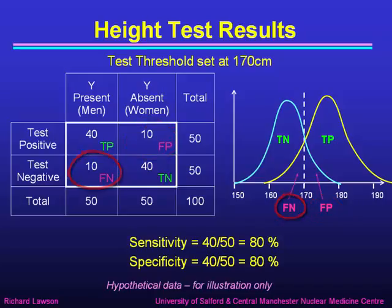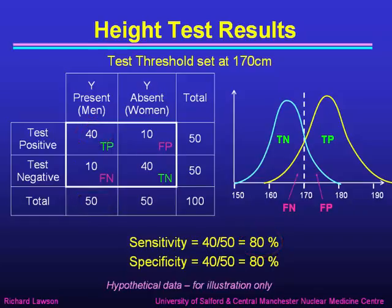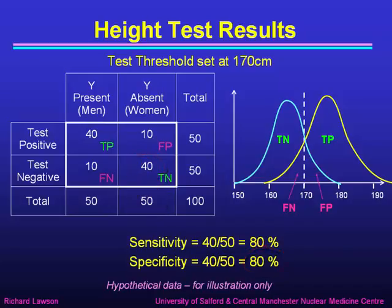If we work out the sensitivity and specificity for this hypothetical data, the sensitivity is the true positives — 40 — over the total in that column — 50 — which is 80%, and the specificity is again 80%. So we have a good sensitivity and a good specificity.